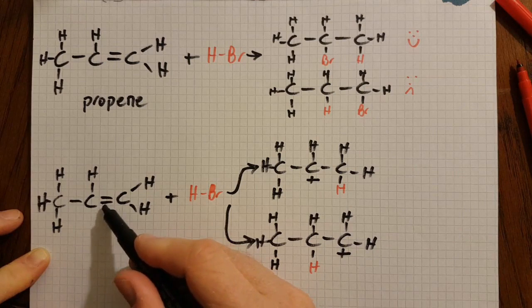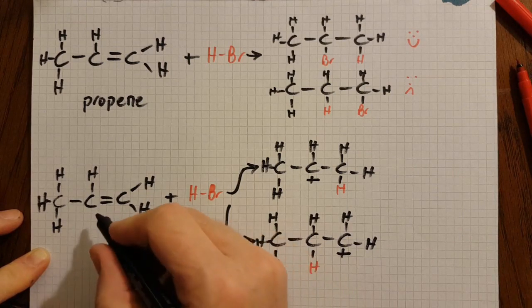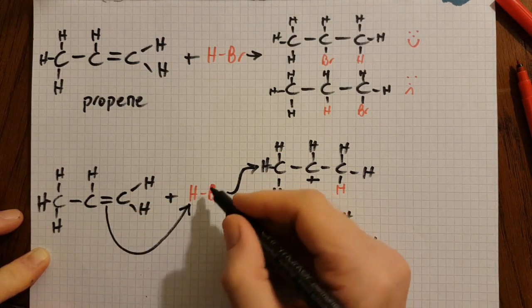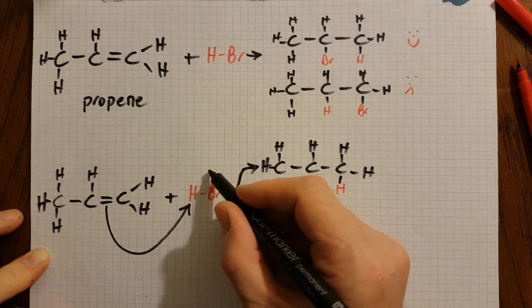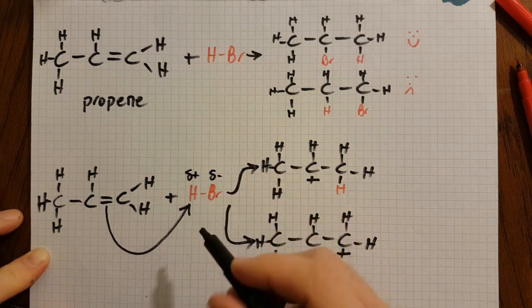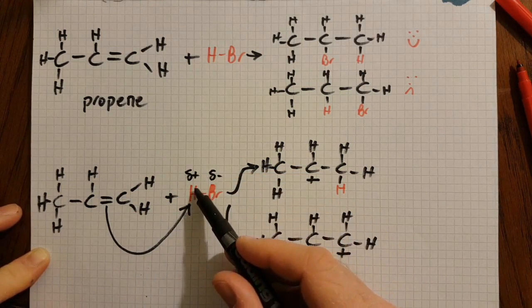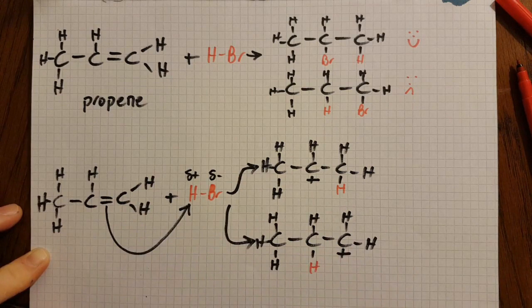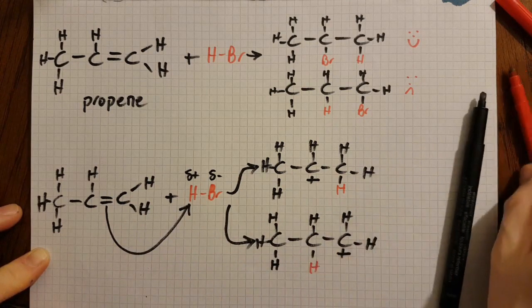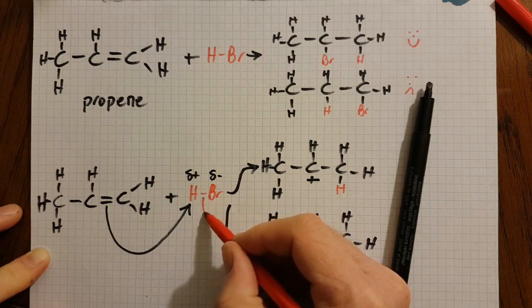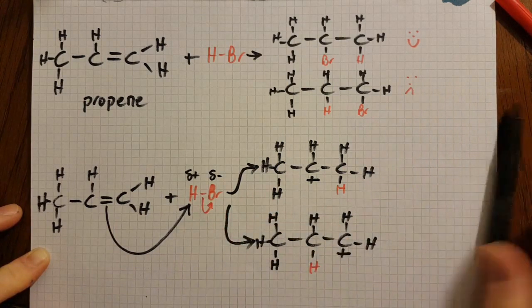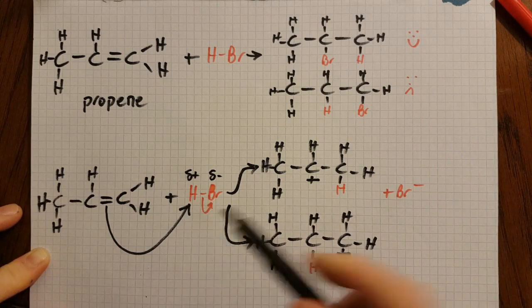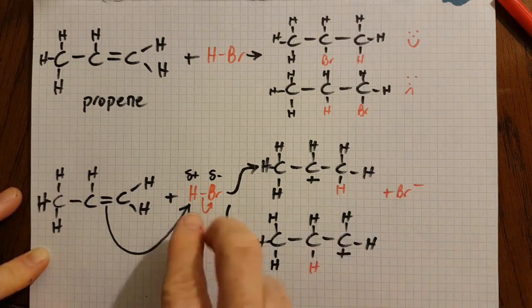The pi electrons here in the double bond are going to be bonding to this hydrogen on the hydrogen bromide. Bromine has a higher electronegativity than hydrogen, so that's going to be a little negative and that's a little positive. So this is acting like an electrophile—it loves electrons. This is electrophilic addition. This bond here is going to break and undergo heterolytic fission, and I mustn't forget the bromide that's going to be made from that.